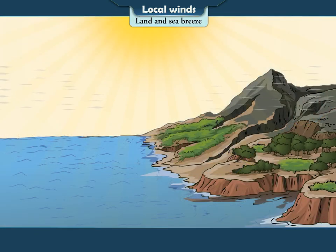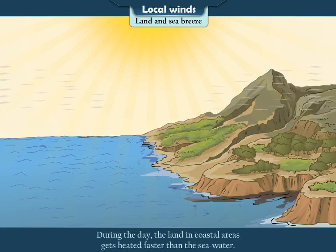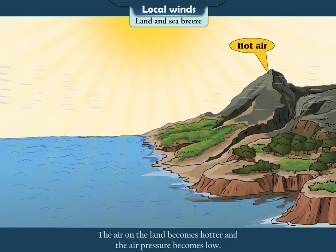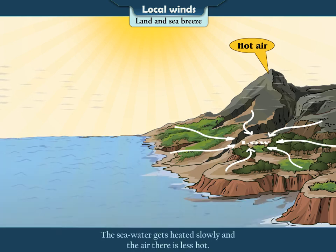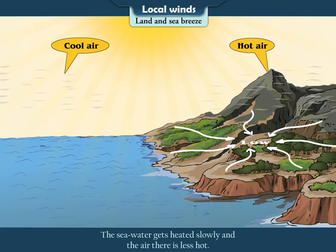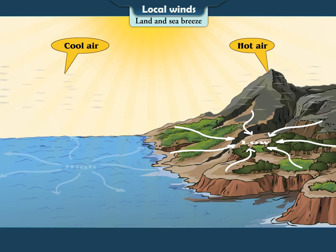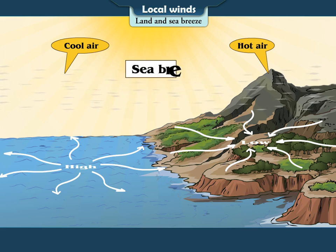Land and Sea Breeze. During the day, the land in coastal areas gets heated faster than the seawater. The air on the land becomes hotter and the air pressure becomes low. On the other hand, the seawater gets heated slowly and the air there is less hot. Therefore, the air pressure is high over the sea. As a result, winds blow from the sea to the land. They are called sea breezes.